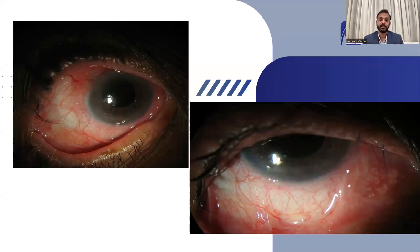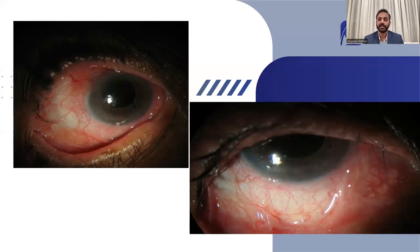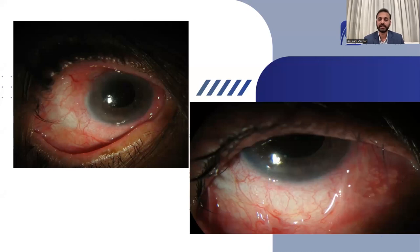Ocular cicatricial pemphigoid is an immune-mediated condition, very commonly seen in older patients — those 60 years or more aged are more prone. It is a genetically determined disease. Those who are genetically predisposed, whenever there is an environmental trigger — in this case the trigger was surgery — develop the condition. The event of surgery was trauma to the patient, which triggered the immune reaction, leading to formation of mucosal folds and persistent inflammation.